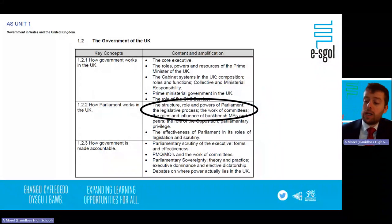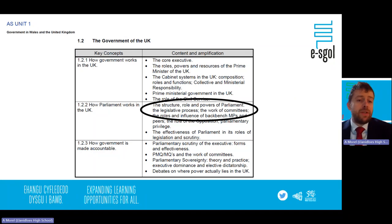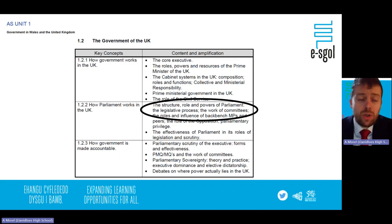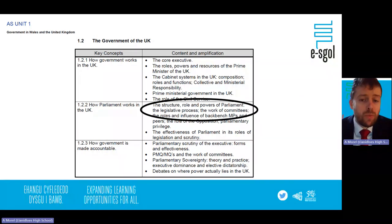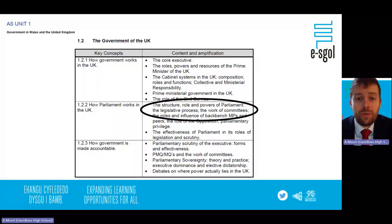Today we're going to look at a comparison between the House of Commons and the House of Lords. This fits into Unit 1 Section 2 — the Government of the UK — and in particular 1.2.2, which is how Parliament works in the UK. The first bullet point says the structure, role and powers of Parliament. Parliament is made up of two elements: the House of Commons and the House of Lords, so we're looking at the structure, role and powers of both.